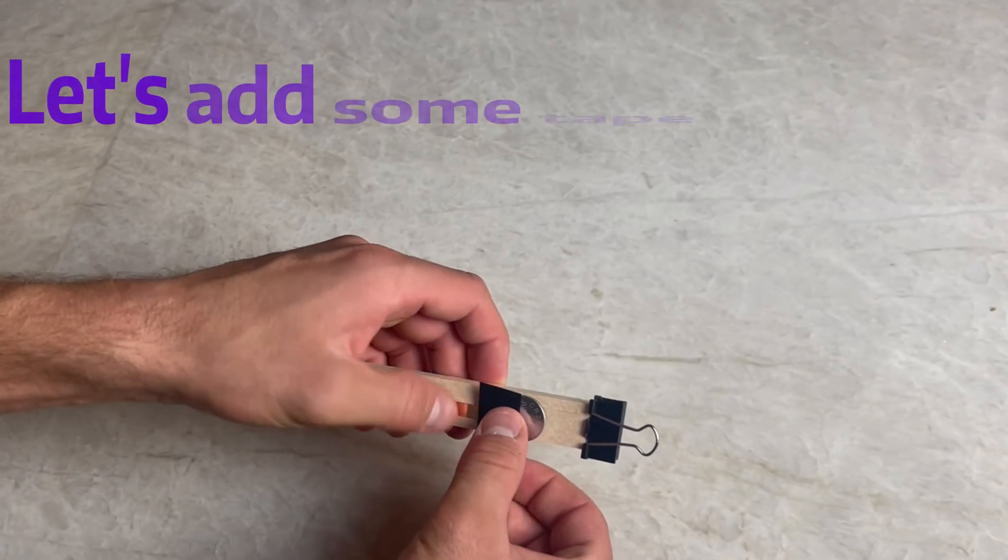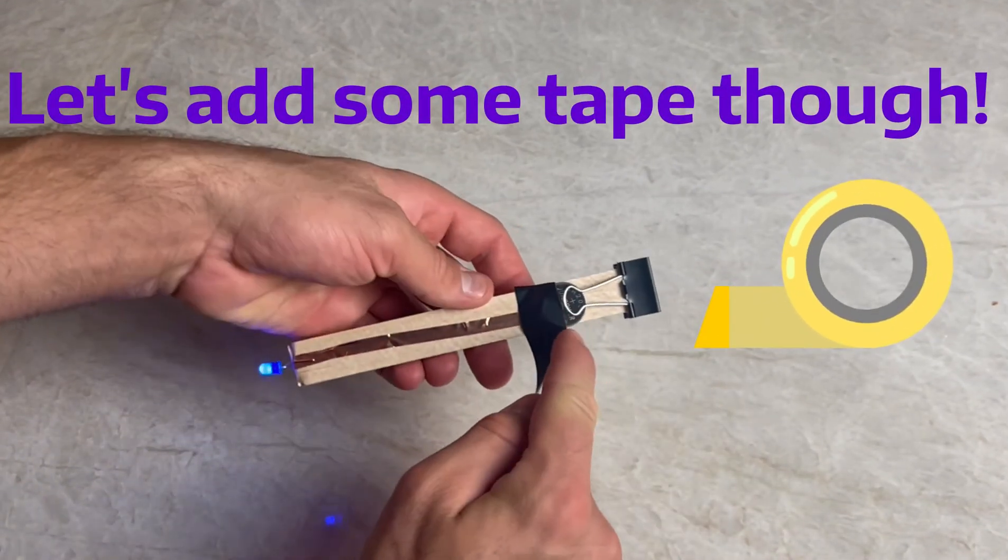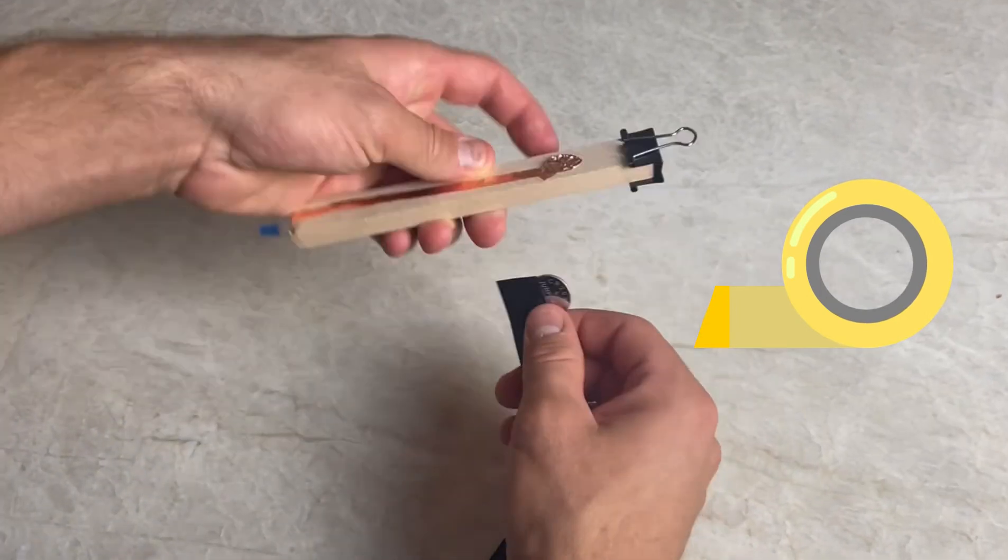And believe it or not now we're actually in pretty good shape. This circuit and flashlight will work but just to make sure that the battery is held in place well, let's tape it on in.